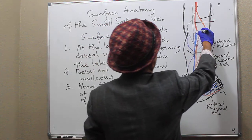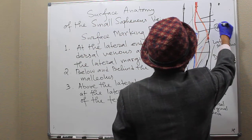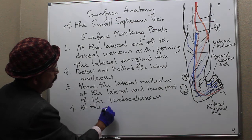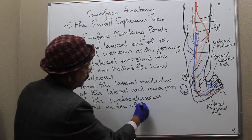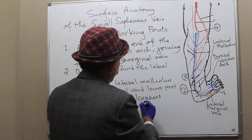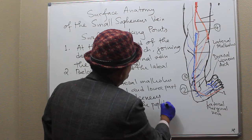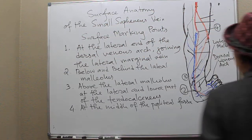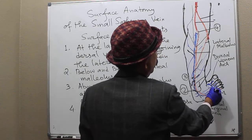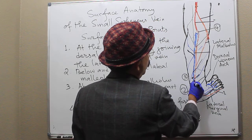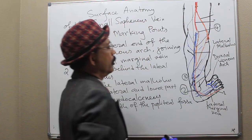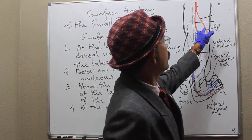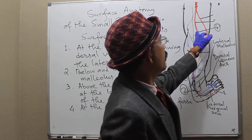The fourth point is at the middle of the popliteal fossa. So you have all four points. If we draw a line through them, we get the outline of the small saphenous vein.